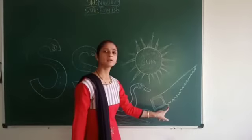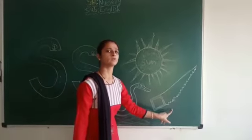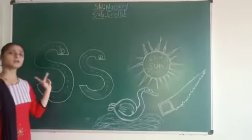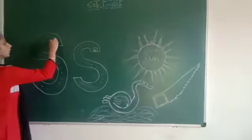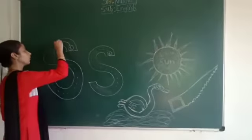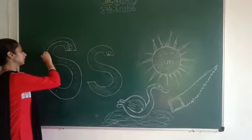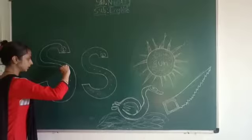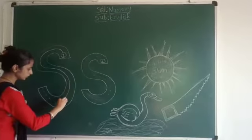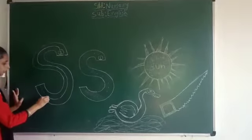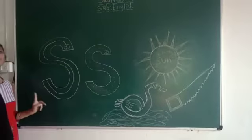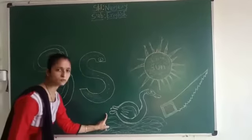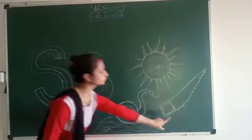What is this, children? S for sun. Now how to write mama S for sun? Look here. Join the door, go down slowly, make it a half cup, then go down and make it again a half cup. This is called mama S for sun.